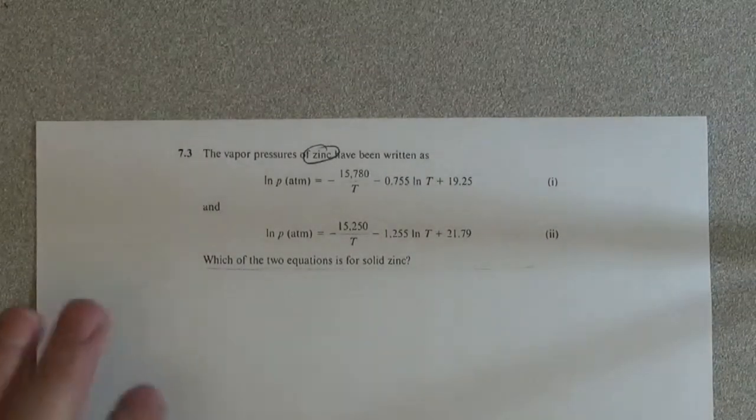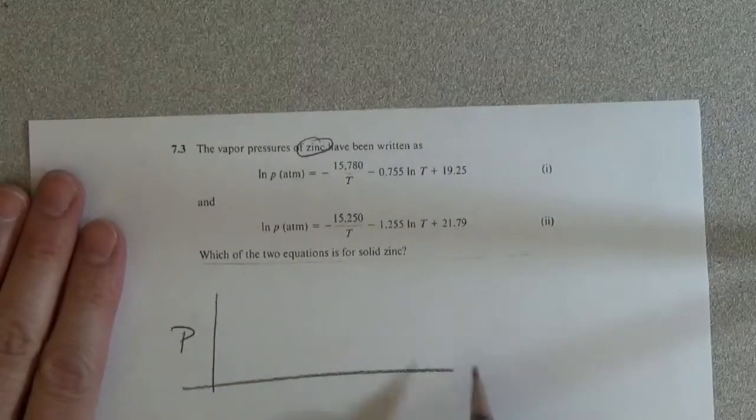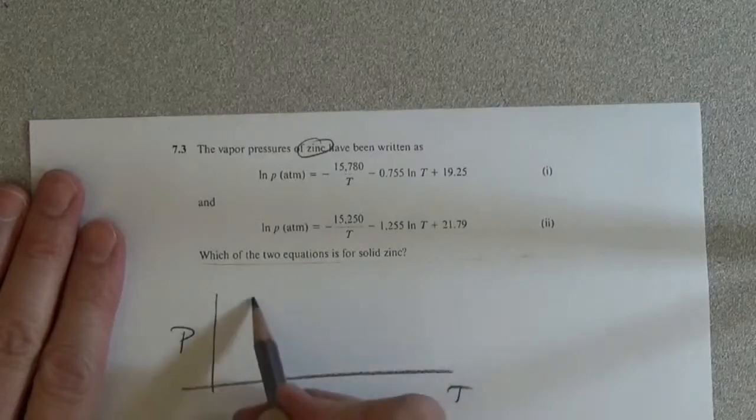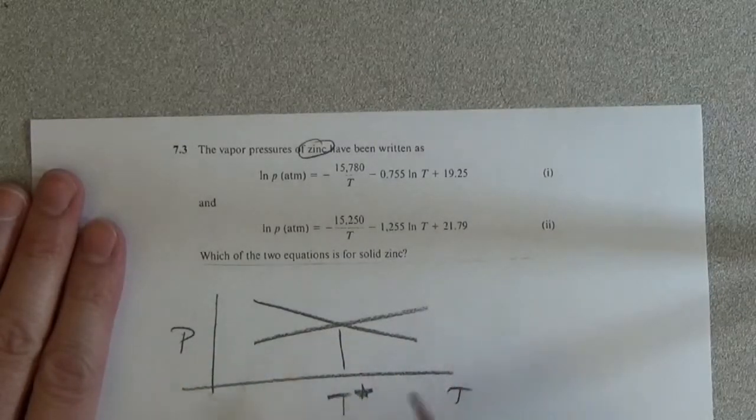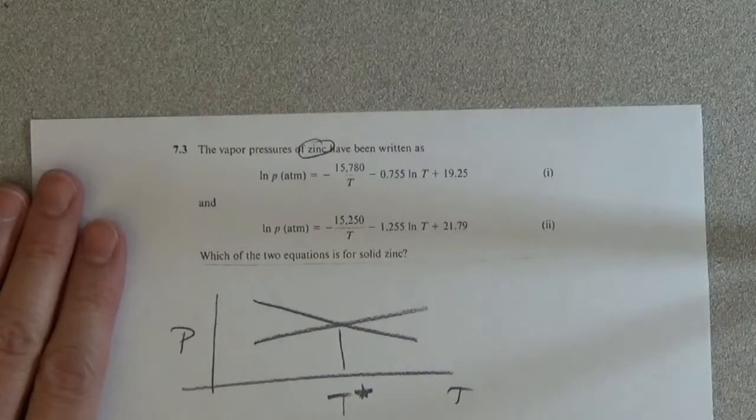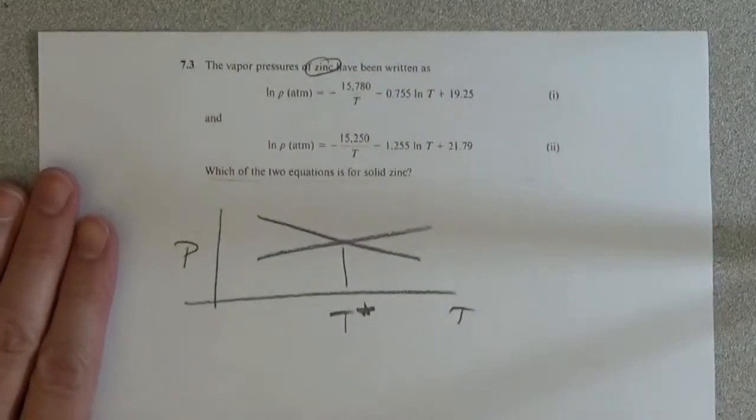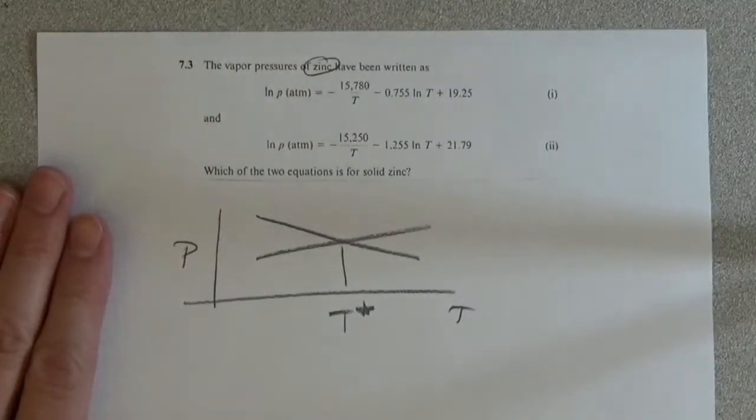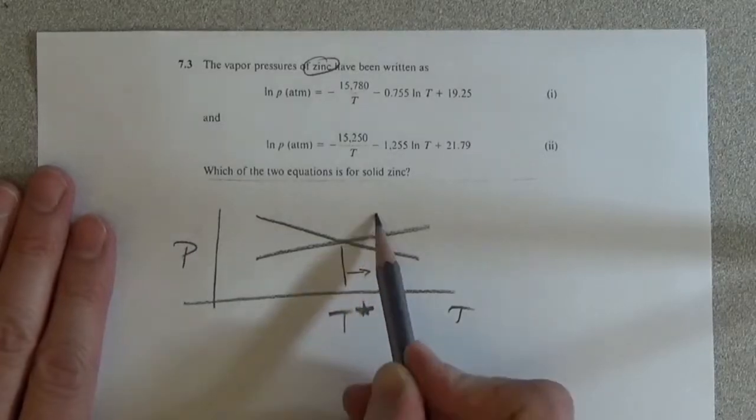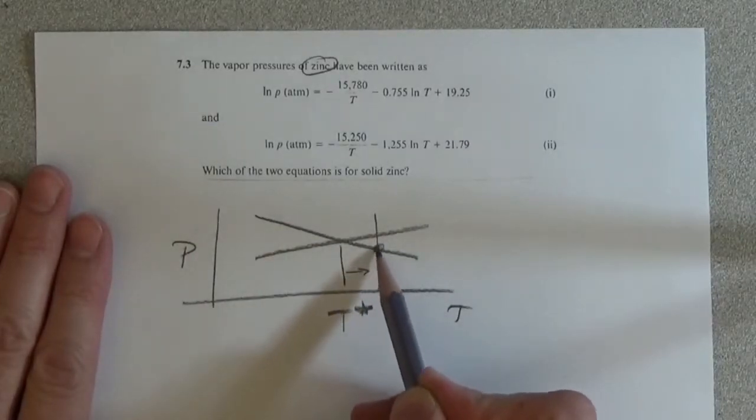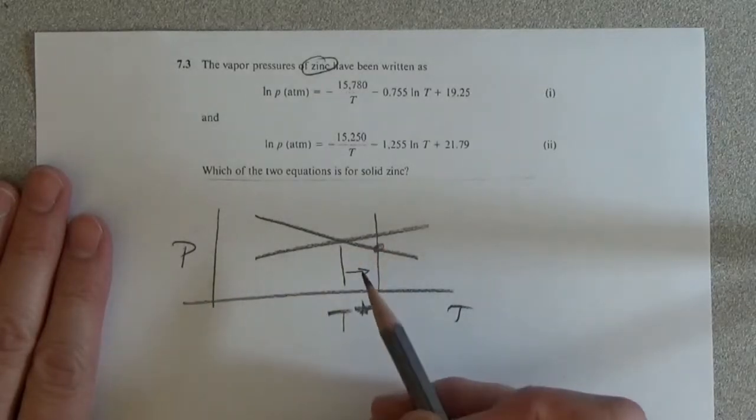So in particular, if we have pressure versus temperature, at some point we're going to have some temperature where the two pressures are equal. And when that happens, we know that if we go slightly above, that we should wind up with a pressure for liquid which is lower than for solid.